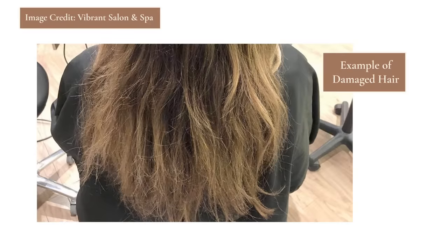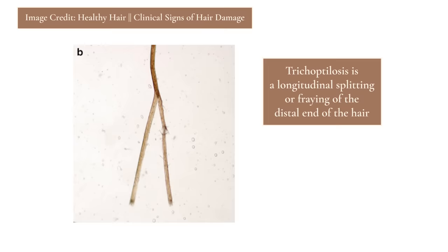Usually people with hair shaft abnormalities, whether acquired or something someone's born with, have a change in the texture of the hair. Most hair shaft abnormalities will look like frizzy, broken, frayed, or dull hair. Specifically, split ends or trichoptylosis are defined as a longitudinal splitting or fraying of the hair, particularly at the distal end — the ends of your hair — where you see the hair actually split off into one or more pieces.